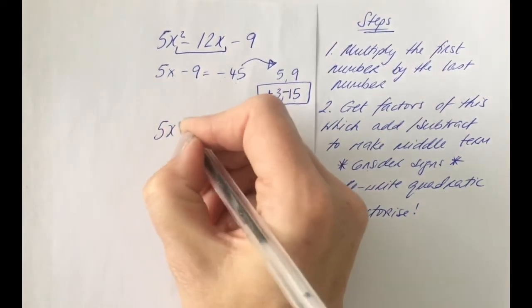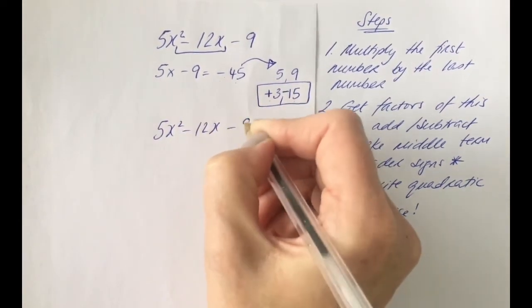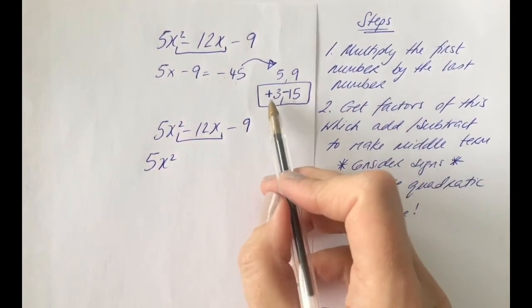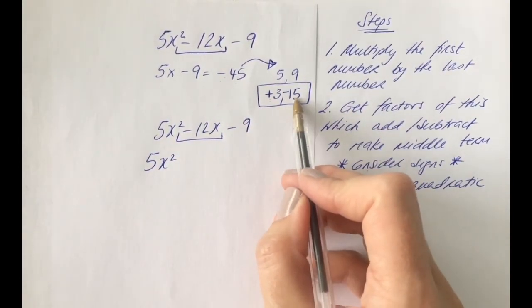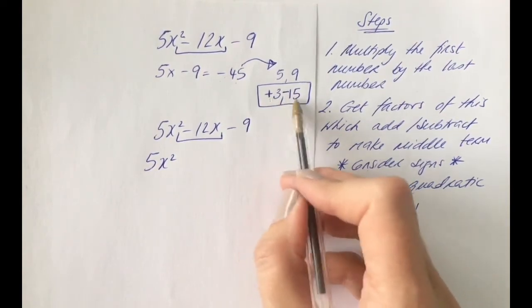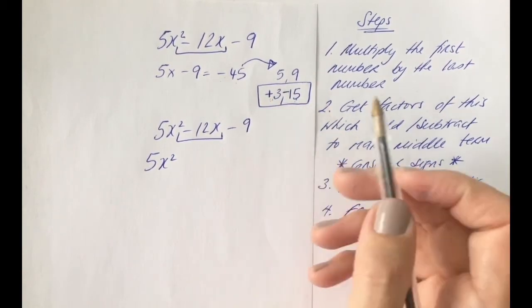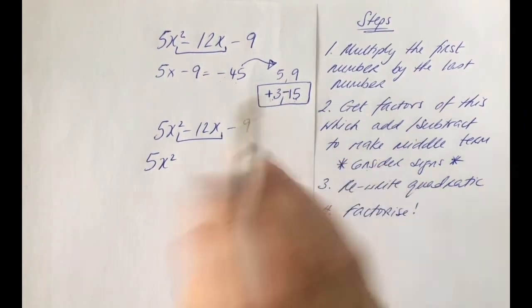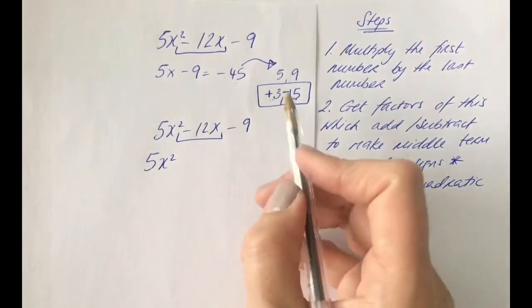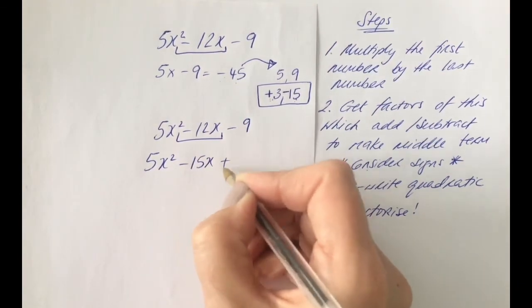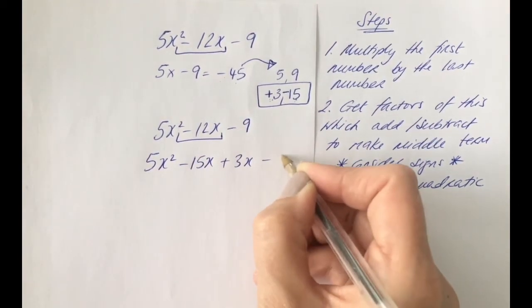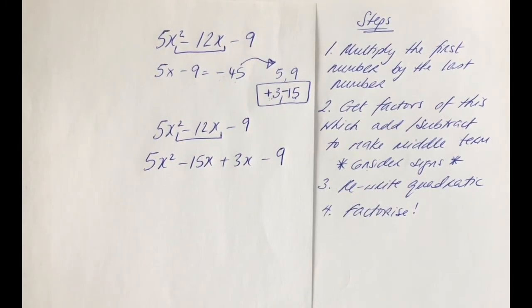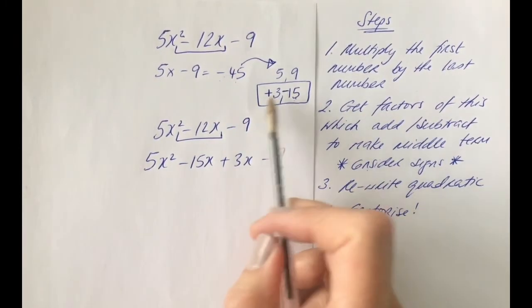So, now we're going to rewrite the quadratic. And instead of that middle term minus 12x, we're going to rewrite it with the plus 3 and the minus 15. Now, it doesn't matter which way round you put these. You will still end up with the same terms in the brackets. For ease of working this out, I'm going to put the minus 15 first and the plus 3x second. It will work, though, both ways. The order here doesn't matter.